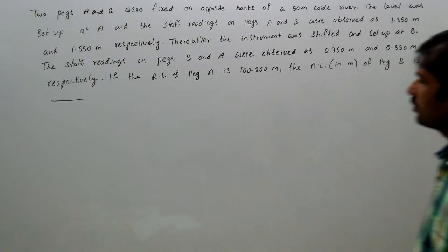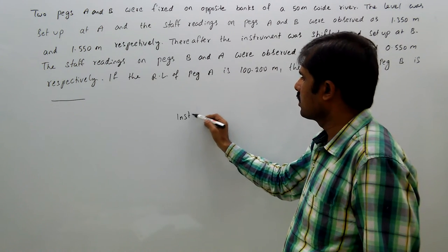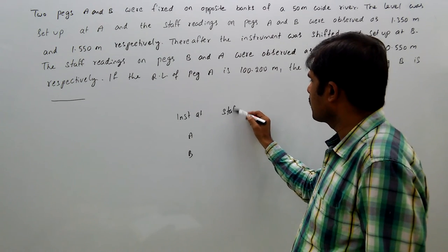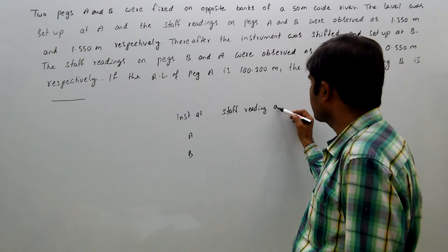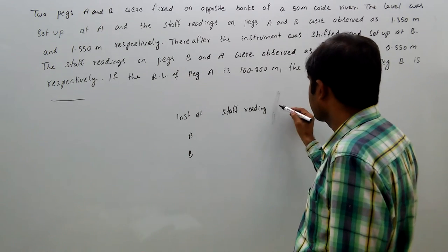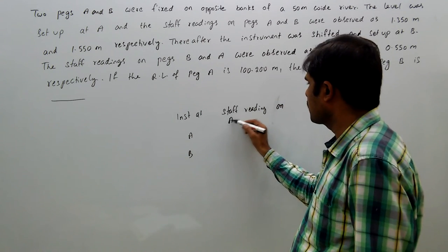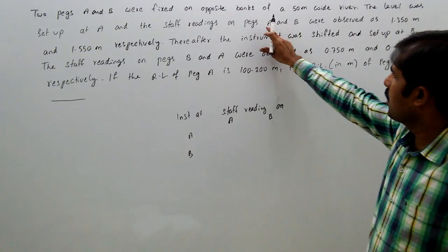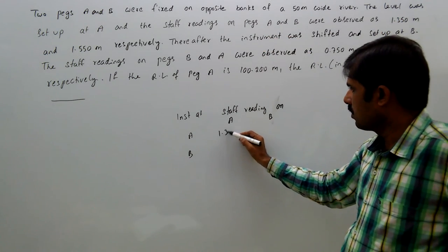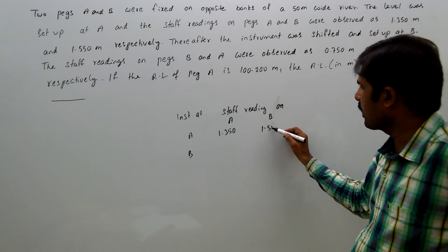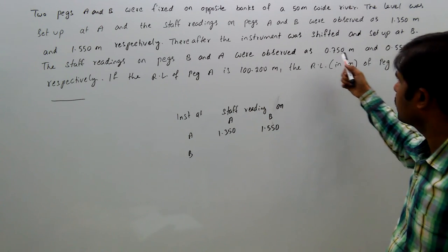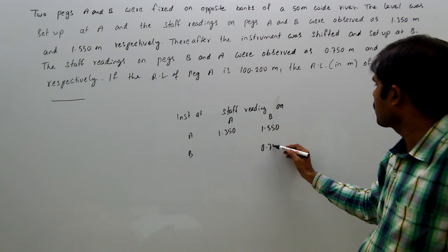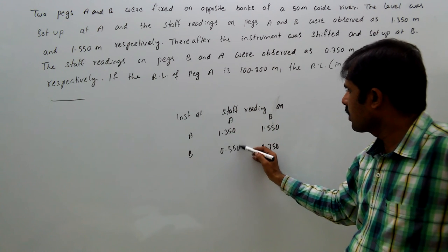First, we will make a table with columns for instrument position at A and B, and staff readings on A and B. When the instrument is first set up at A, readings on A and B are 1.35 and 1.55. When the instrument is set up at B, the observed staff readings on B and A are 0.750 and 0.550. All divided by 2 gives the correct level difference.